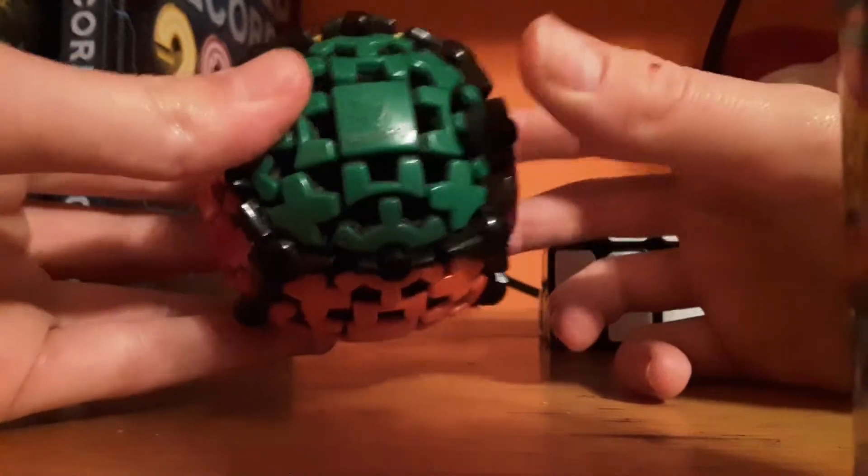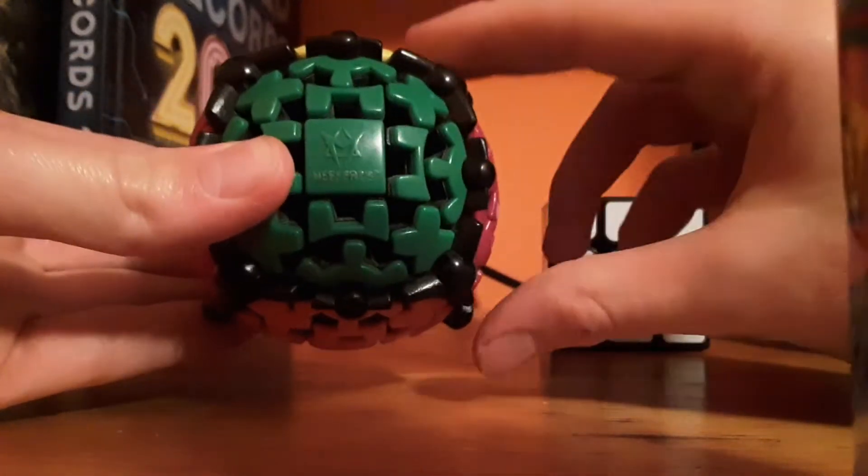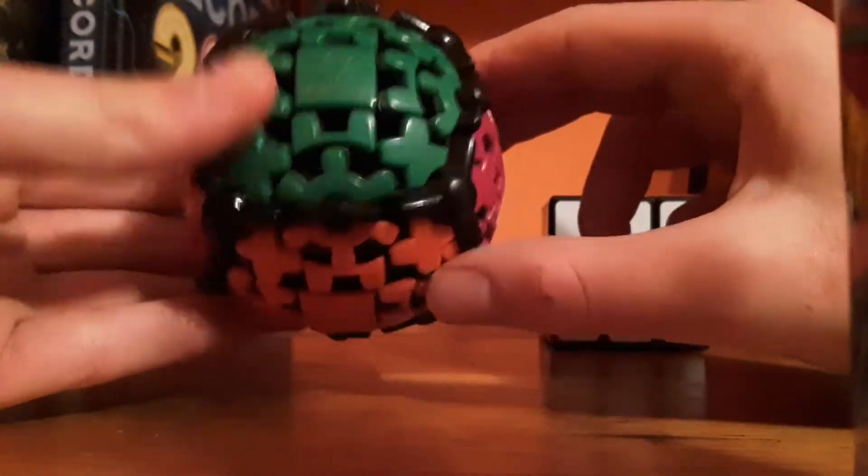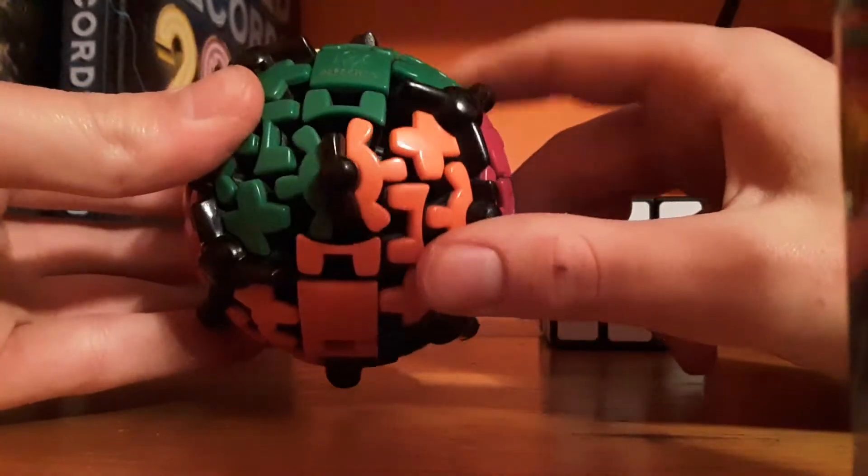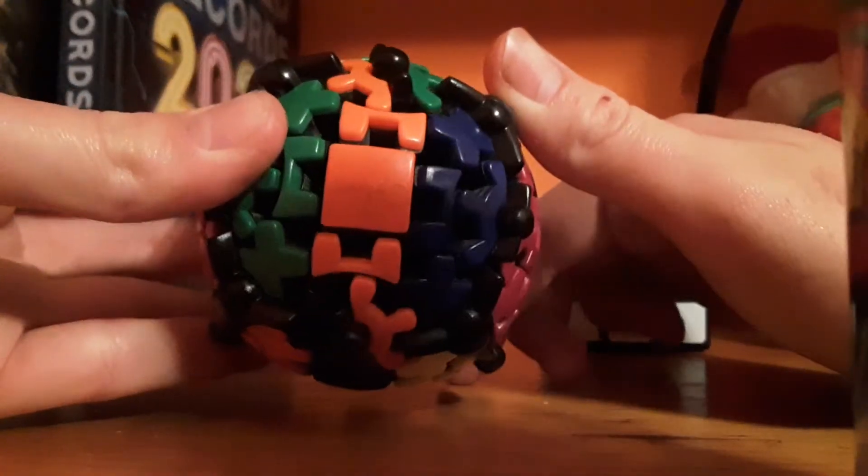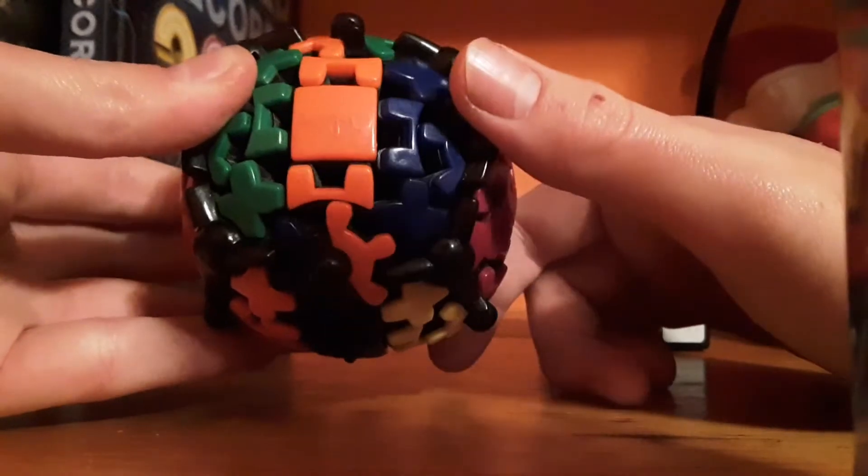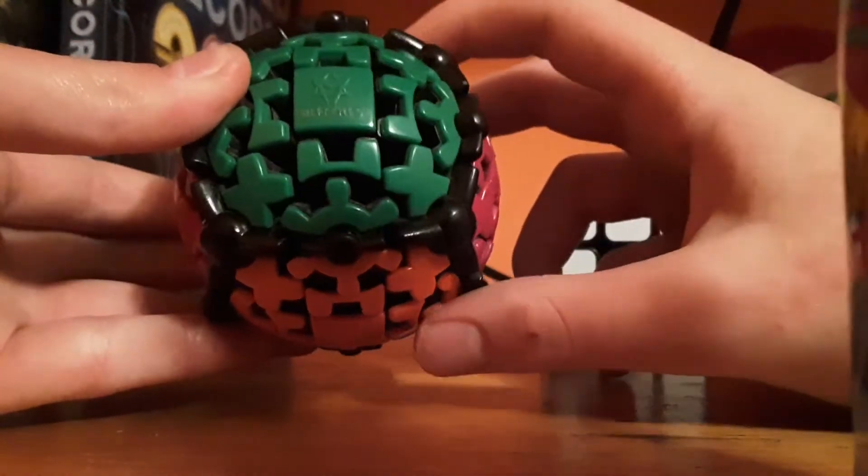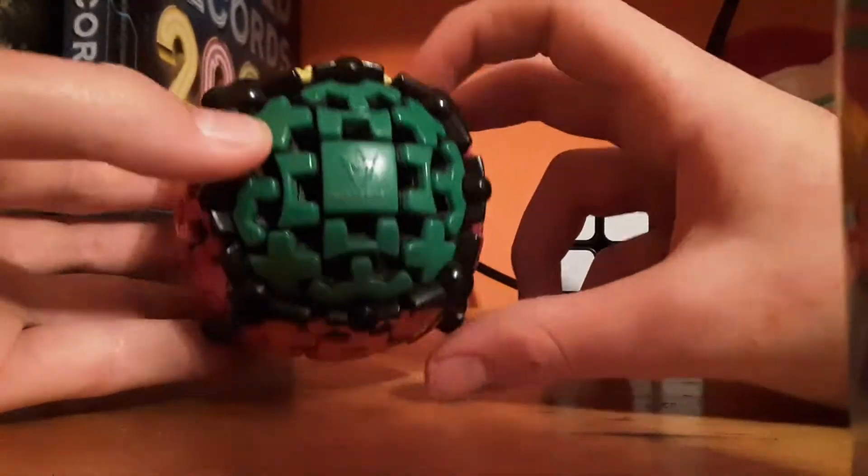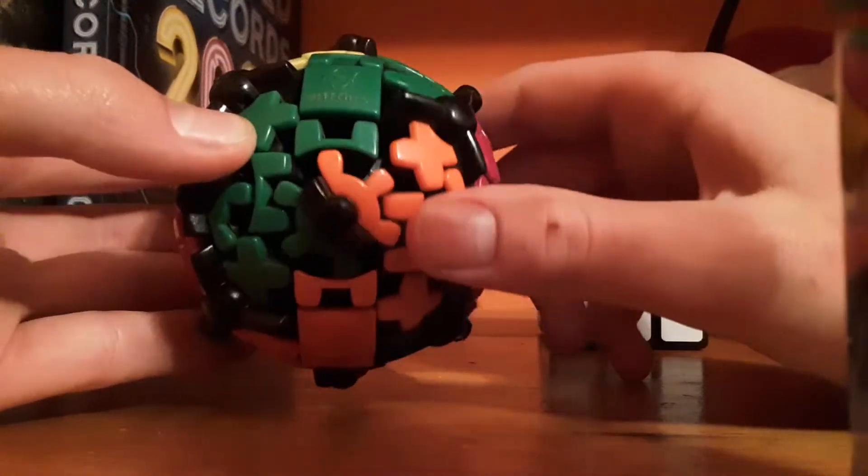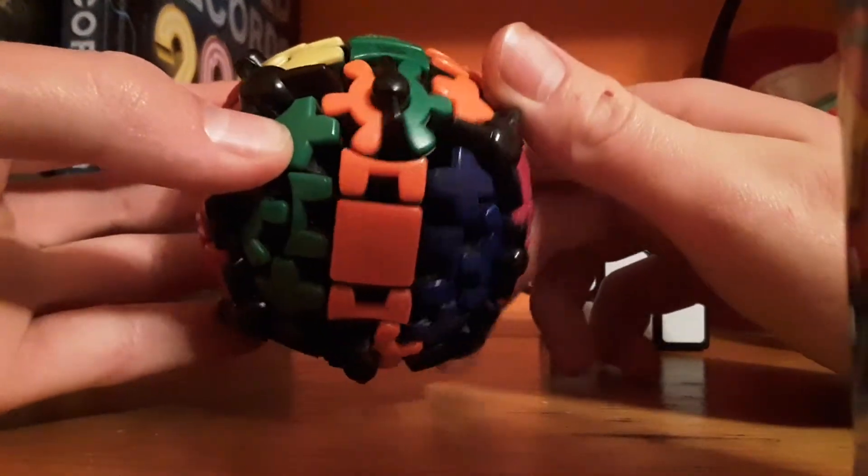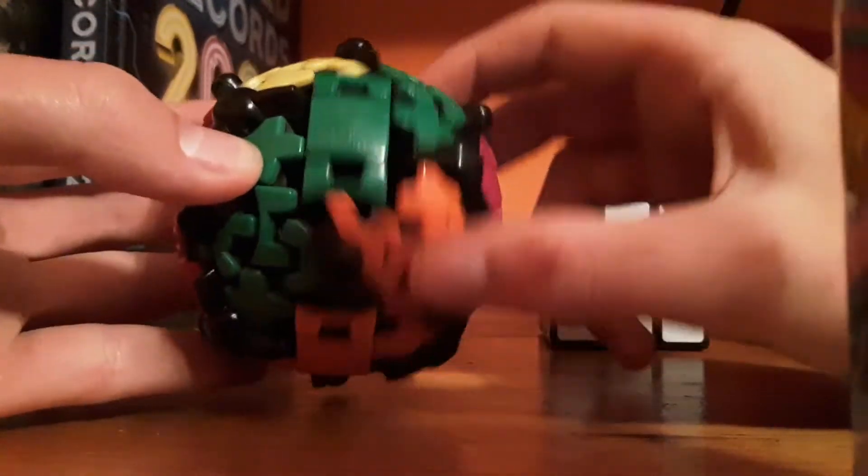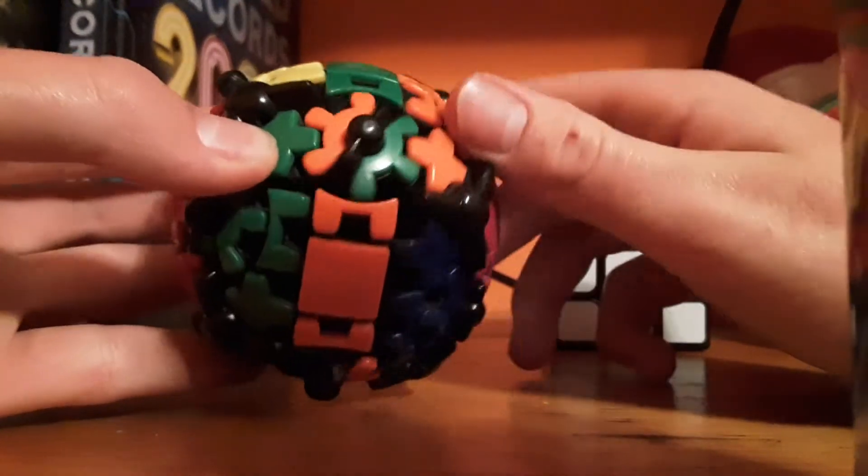You cannot move, like, say you want to hold the left side by itself and turn the right side up. It moves the center with it at a different speed, because of the gears. So if you were to move the center just up to the yellow side here, it would move the right side twice.